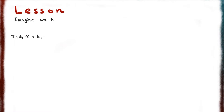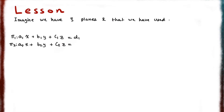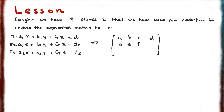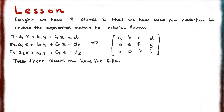We're going to imagine that we have three planes — pi 1, pi 2, and pi 3 — and that we have written their augmented matrix. From that augmented matrix we reduce it to its echelon form, meaning that all the bottom-left corner values of the matrix are going to equal zero. There are many different situations we can have based on three planes, so let's cover them.